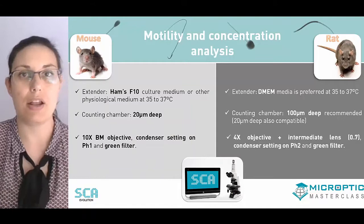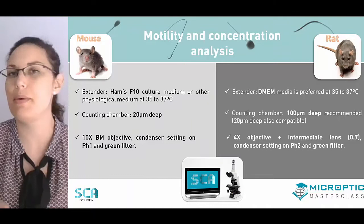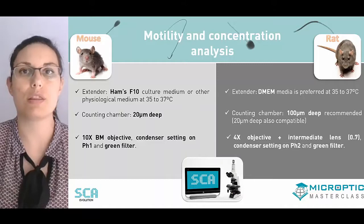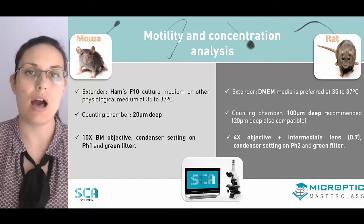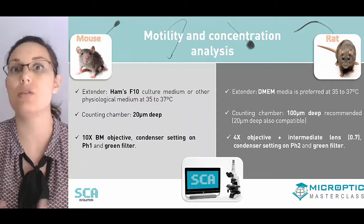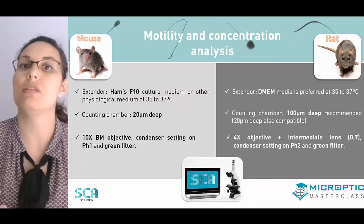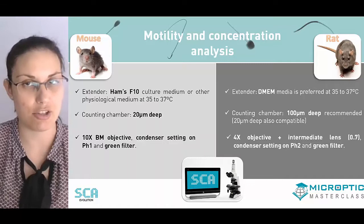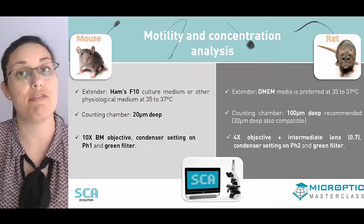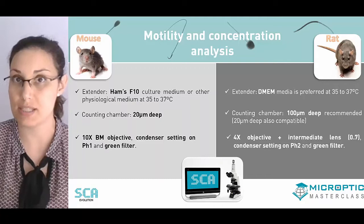Another point to consider is the microscope settings, which will be very different depending on the animal. With mouse, it is better to work with a 10x objective in negative phase contrast. For rat, due to its larger size, it is better to work with a 4x objective including an intermediate lens of 0.7 that reduces the original size observed at 4x magnification. The analysis will also be performed in pseudo-negative phase contrast, not fully negative phase contrast.